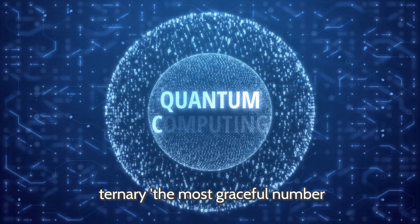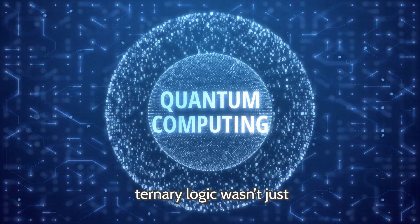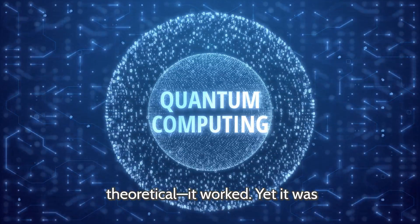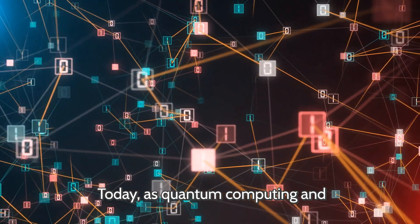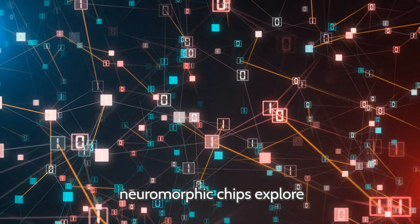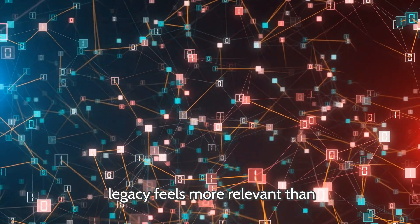Donald Knuth once called balanced ternary the most graceful number system. Seton proved that ternary logic wasn't just theoretical, it worked. Yet it was sidelined, labeled a fruit of university fantasy. Today, as quantum computing and neuromorphic chips explore multi-valued logic, Seton's legacy feels more relevant than ever.